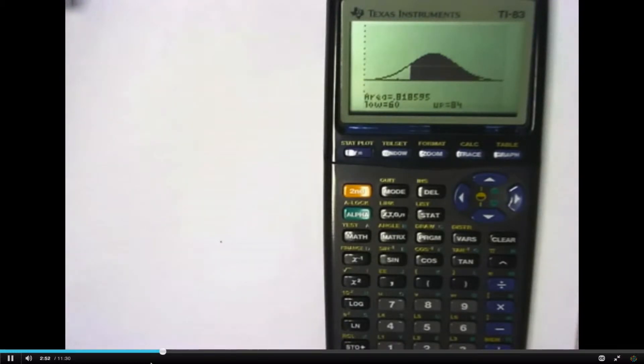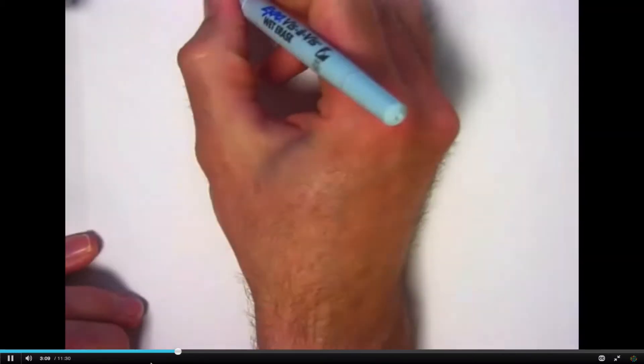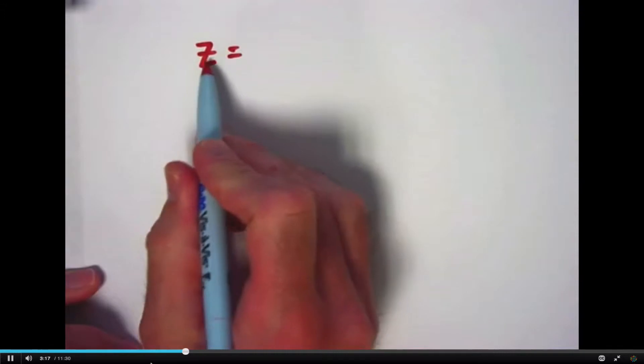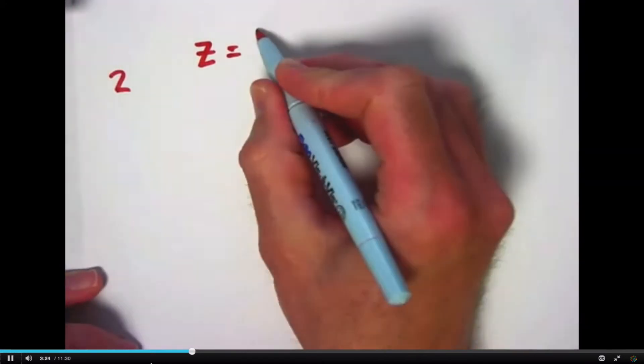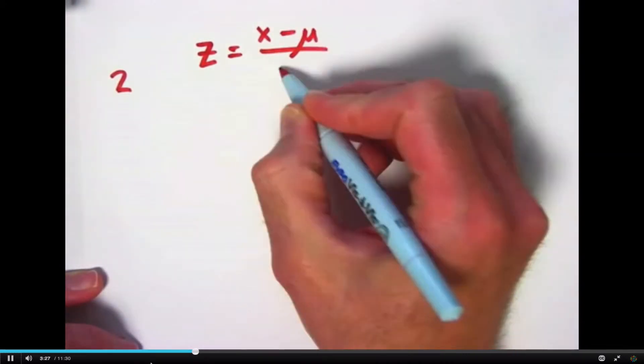It would be nice to have a variable that represents how many standard deviations above or below the mean a particular number is. In this case, the 60 and the 84. And there is such a variable. It's called the z-score. And here's the formula. Z, and by the way, almost all mathematicians make their z with a horizontal line there, because if they don't, then it looks too much like a 2 sometimes. So, z equals x minus μ divided by σ.